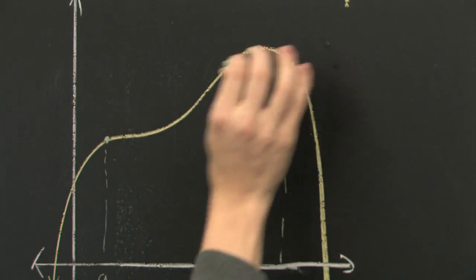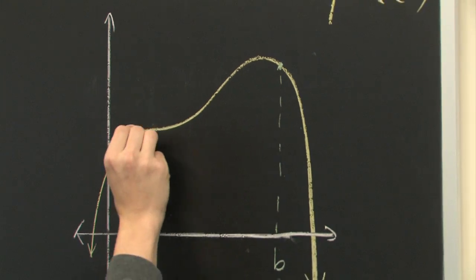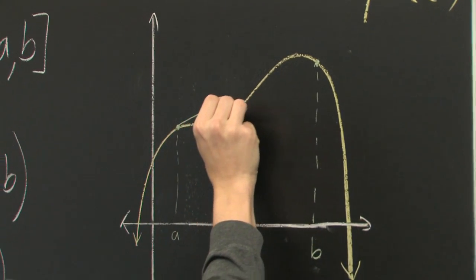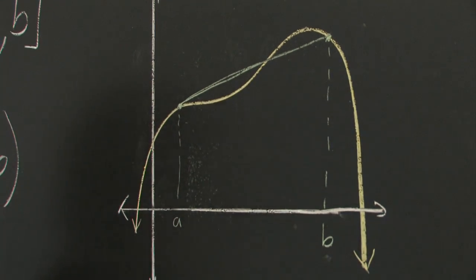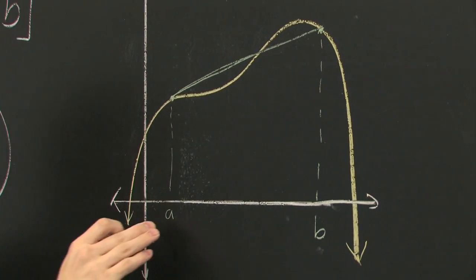So, f of b minus f of a over b minus a, that can be thought of as the slope of the secant line that is connecting a and b.